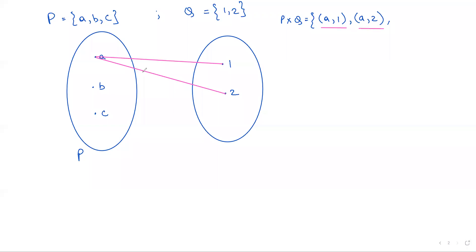The two ordered pairs of P cross Q in the arrow diagram are represented by two lines with an arrow pointing towards Q. The arrow is always pointing towards the second value, thereby giving it a direction.